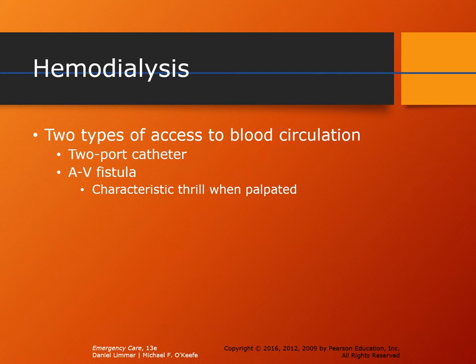Hemodialysis is typically done through two types of access points: the two-port catheter, typically found under the clavicle (subclavian catheter), and the AV fistula. The AV fistula is a surgically implanted device typically found on the forearm or lower arm. It looks like two bumps, and you can feel a characteristic thrill — the feeling of blood being powered through the system, which feels different from normal blood flow.